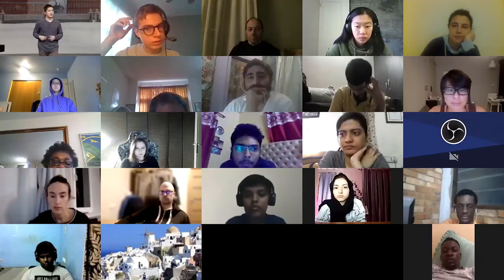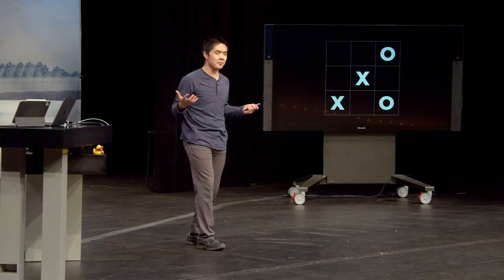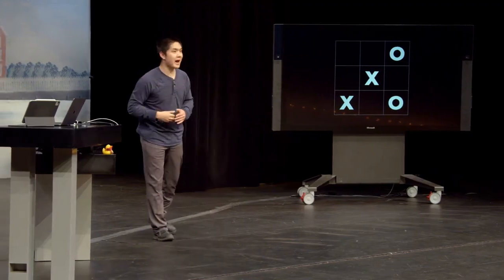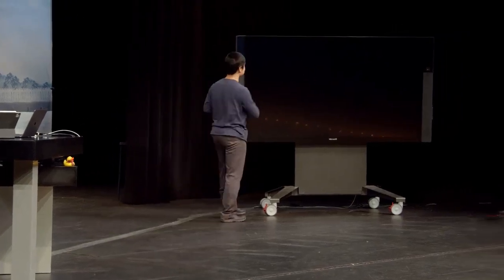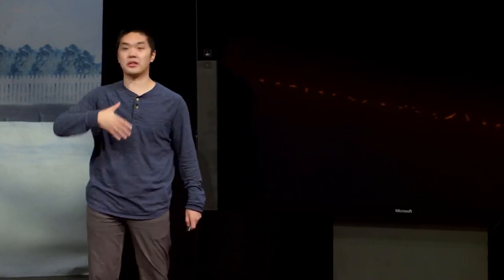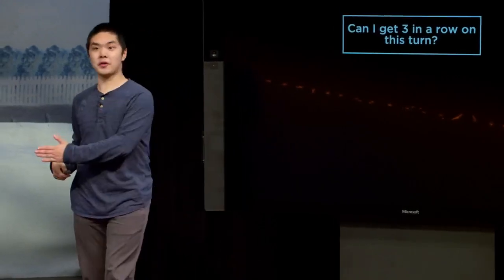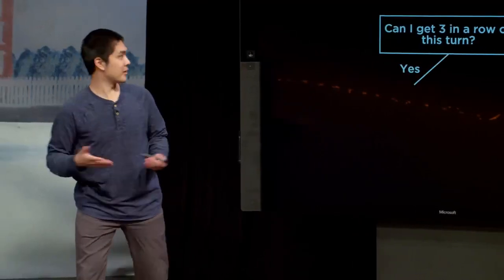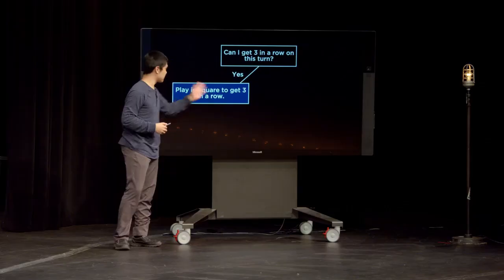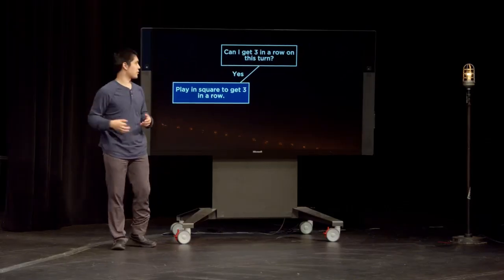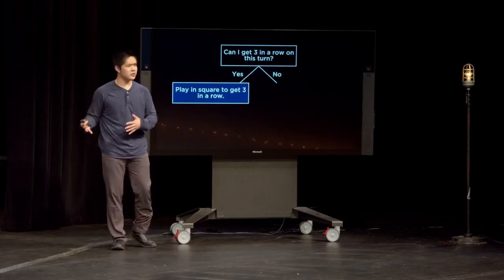Another student suggests: check if there is any possibility for the other player to win. If they have some possibility to win, you could try to block them. So we could start to formulate a decision tree for tic-tac-toe. First, ask: can I get three in a row on this turn? If yes, play in the square that achieves three in a row. If no, ask: can my opponent get three in a row on their next turn? If yes, play in the square to block them.